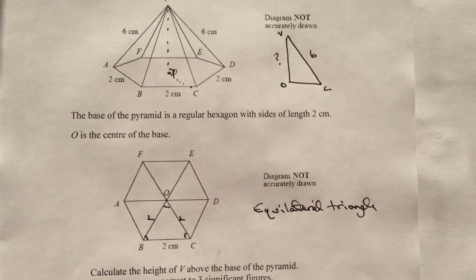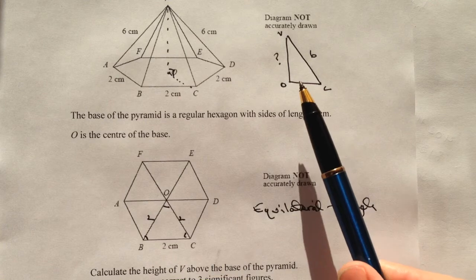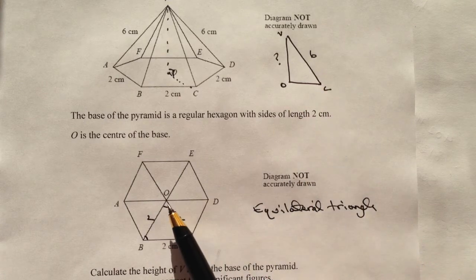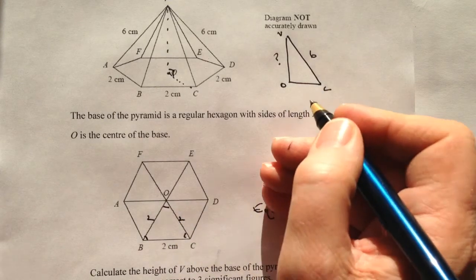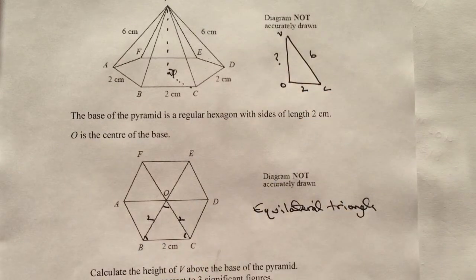What it means then is that OC, which is this length here, is the same as this length here, which is 2 centimetres. Well that's excellent because then that will give us all the information we need to be able to work out the height which is VO.